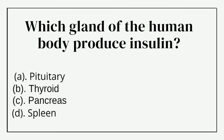Which gland of the human body produces insulin? Option A: pituitary, option B: thyroid, option C: pancreas, option D: spleen. The correct answer is option C: pancreas.